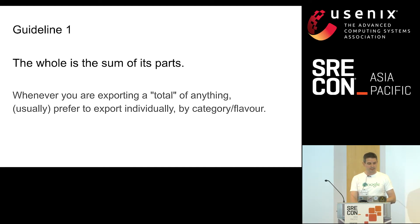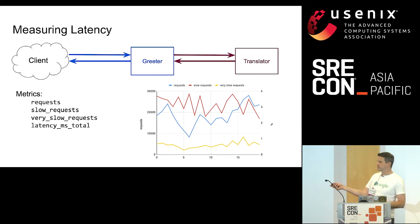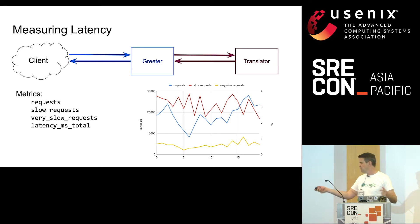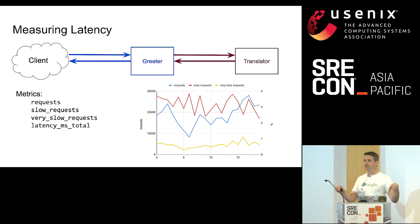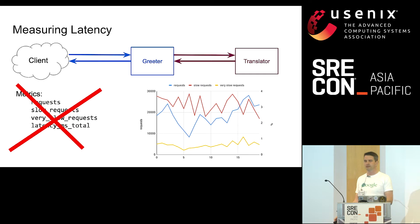Our second SLO was about latency. The typical things we see: number of requests, slow requests, very slow requests, and some kind of cumulative latency counter. But the slow requests — were they still within SLO or already out of SLO? The latency milliseconds total count divided by request rate gives us a mean latency. But is that actually useful? It's not. Latency is generally not a normal distribution. You'll find these metrics everywhere — in all of our code and a lot of documentation — and they are terrible. Please do not use these metrics.